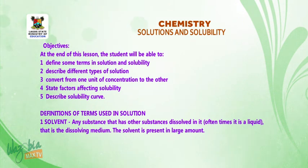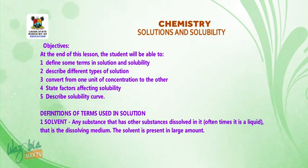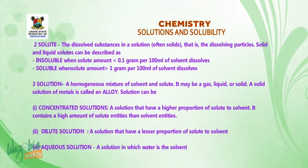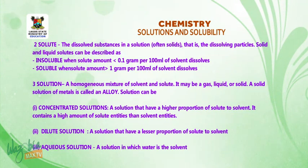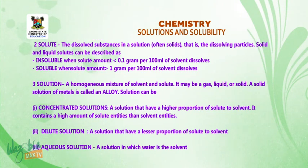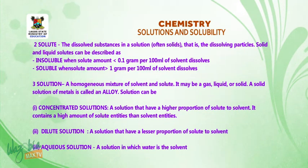Definition of terms used in solution. Number one: solvent — any substance that has other substances dissolved in it. It is oftentimes a liquid, that is the dissolving medium; the solvent is present in large amounts. Number two: solute — the dissolved substance in a solution, often a solid, that is the dissolving particles. Solid and liquid solutes can be described as insoluble when the solute amount is less than 0.1 gram per 100 mL of solvent.